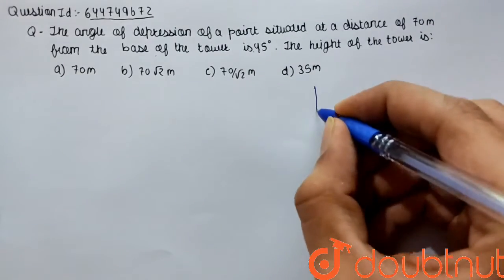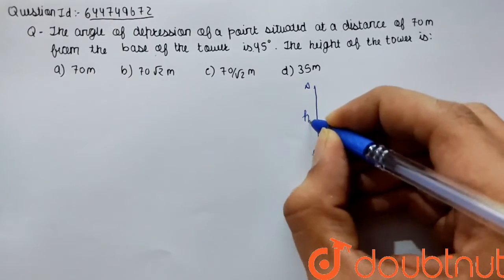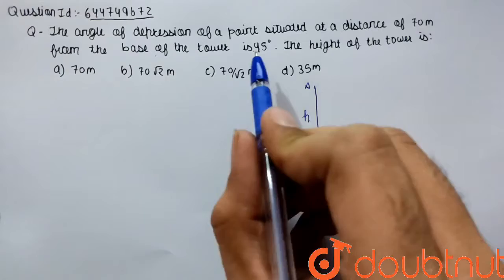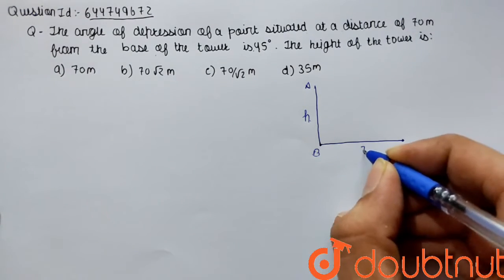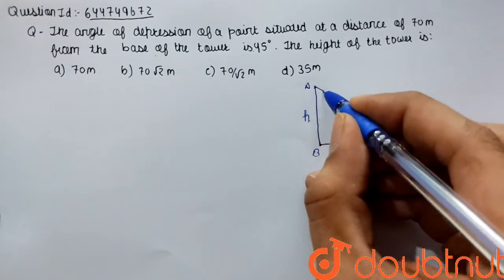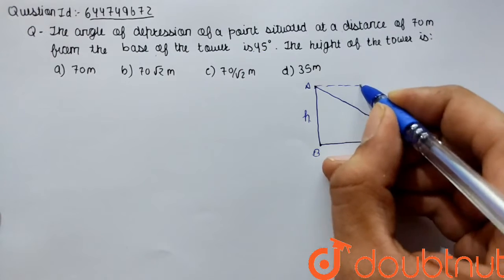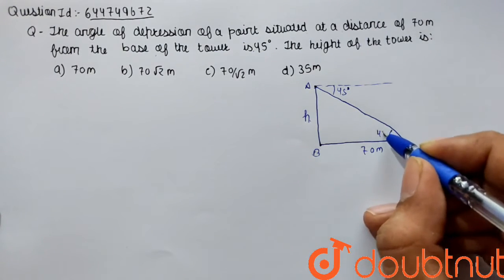They are saying that angle of elevation is from the point 70 meters away, right? It is 70 meters distance, right? So angle of depression, we are having angle of depression is 45 degrees. So this angle will also be 45 degrees.